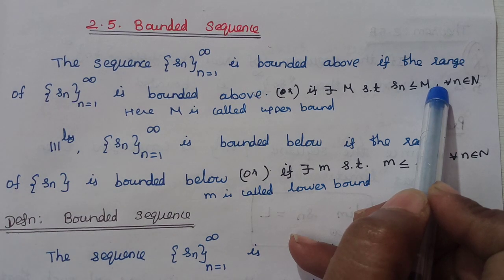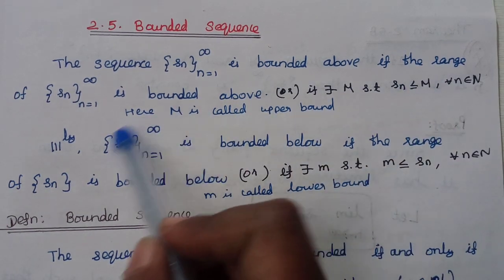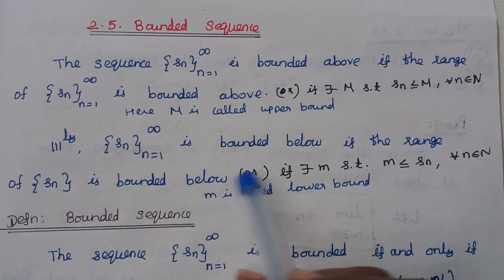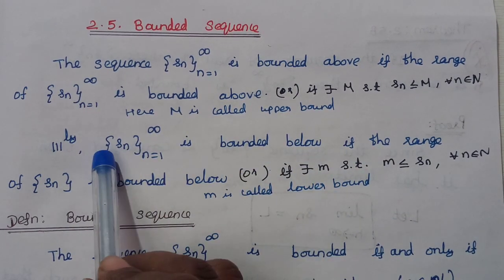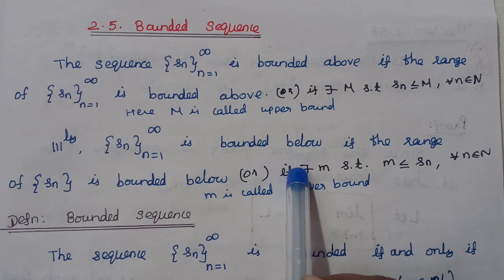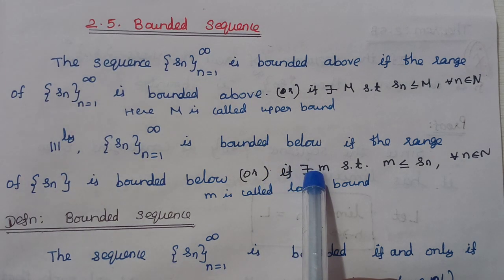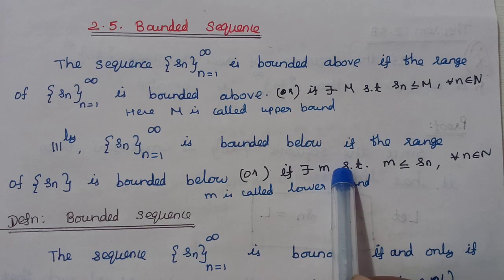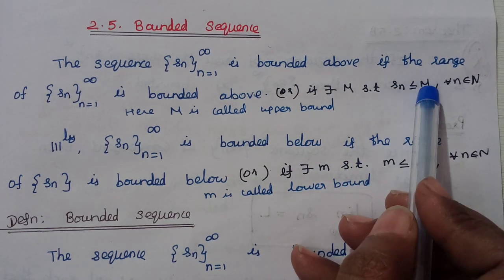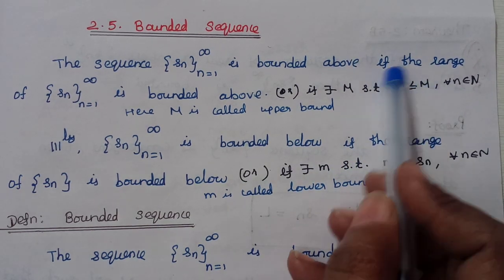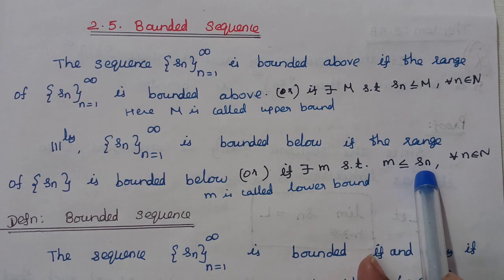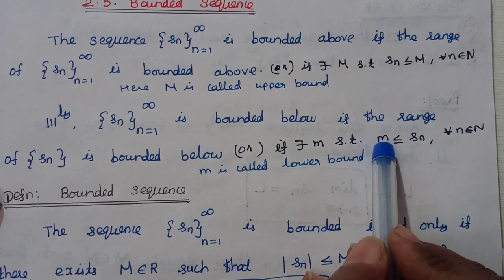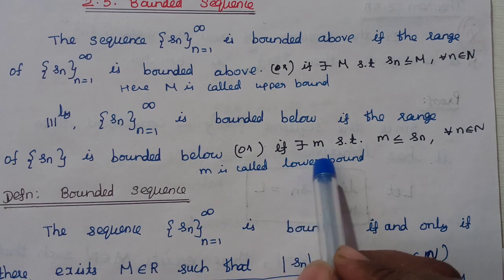Conversely, the sequence is bounded below if there exists a real number m (small m) such that m ≤ Sn for every n belonging to the natural numbers. Then we say that m is the lower bound.